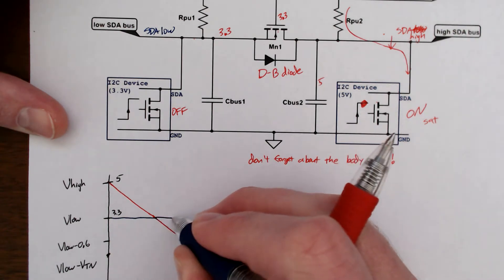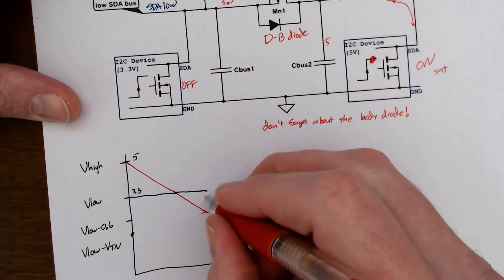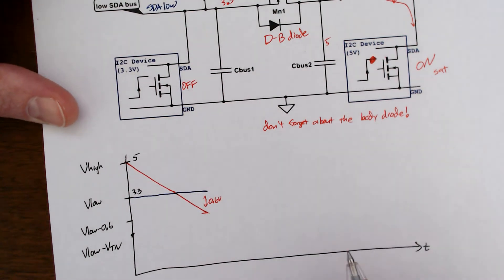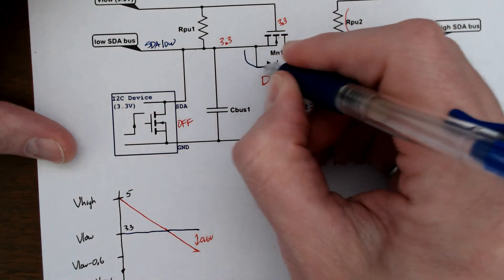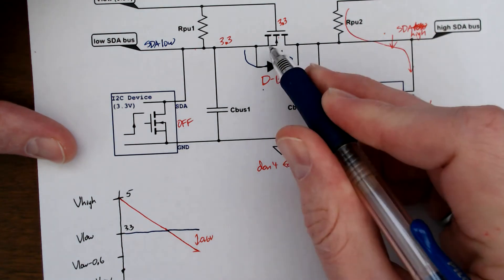This stays the same. We're going to forward bias this diode, and now current is going to flow this direction through the body diode. Our MOSFET is still off.